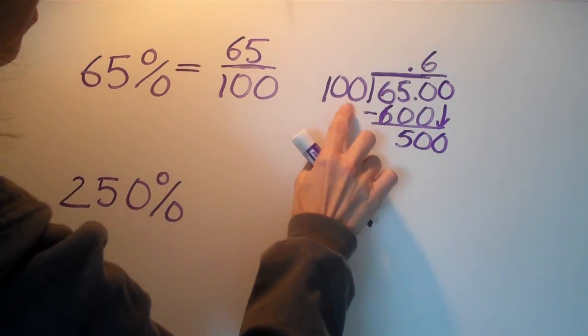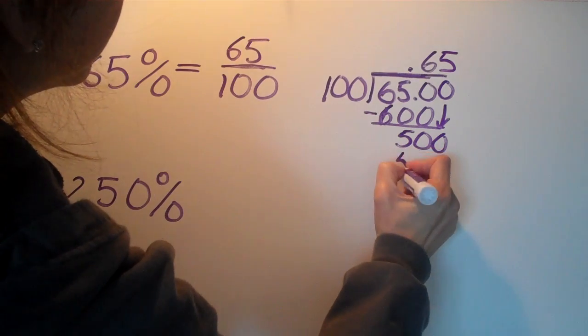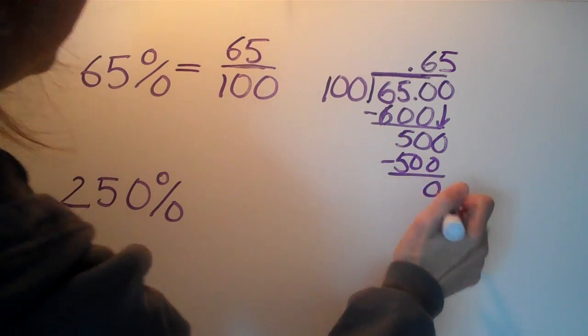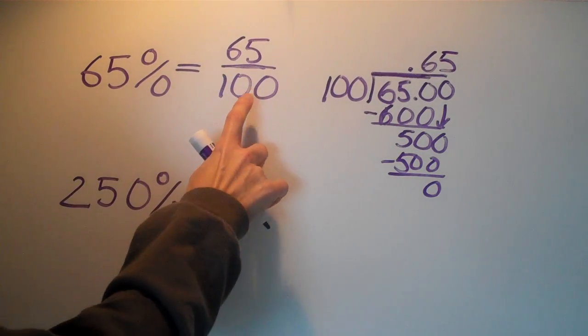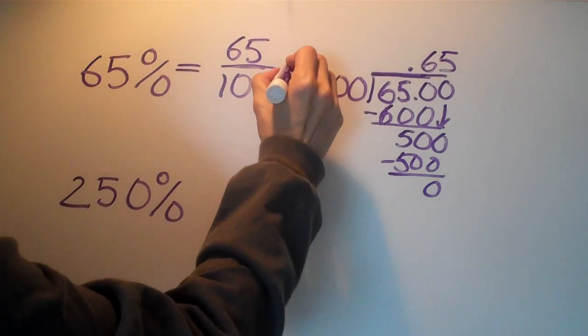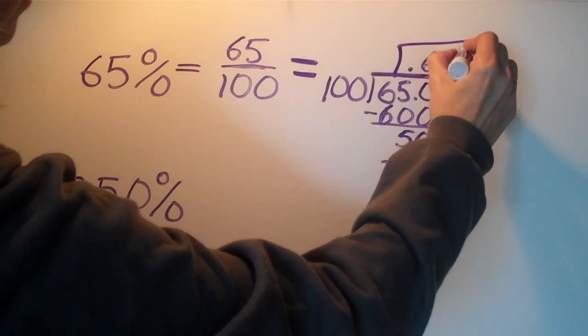100 into 500 goes five times. Five times 100 is 500, do this subtraction and we have our decimal. So 65 percent is equivalent to 65 over 100, which is equal to 0.65 or 65 hundredths, and this is our decimal.